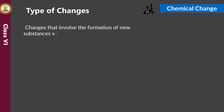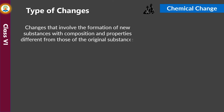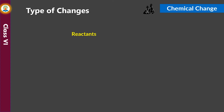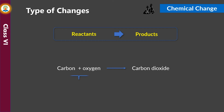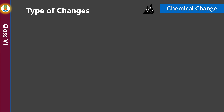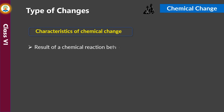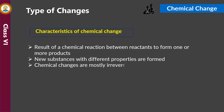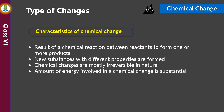Changes that involve the formation of new substances with composition and properties different from those of the original substances are called chemical changes. Common chemical changes that take place around us are burning and rusting. The substances that take part in a chemical reaction are called reactants, and the substances formed as a result are called products. For example, carbon reacts with oxygen to form carbon dioxide — here carbon and oxygen are reactants while carbon dioxide is a product. Chemical changes are mostly irreversible in nature, and the amount of energy involved is substantial, as in the case of burning.